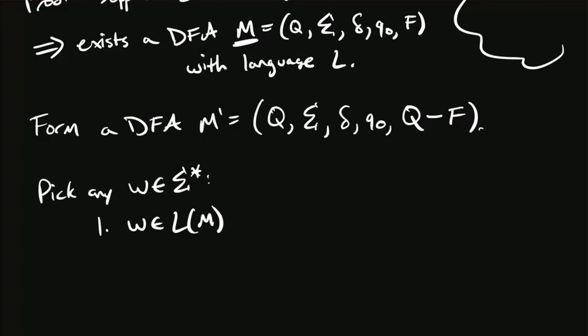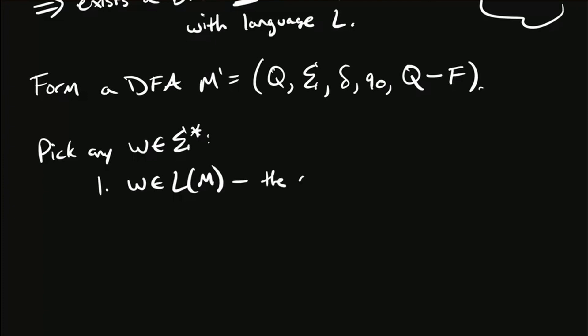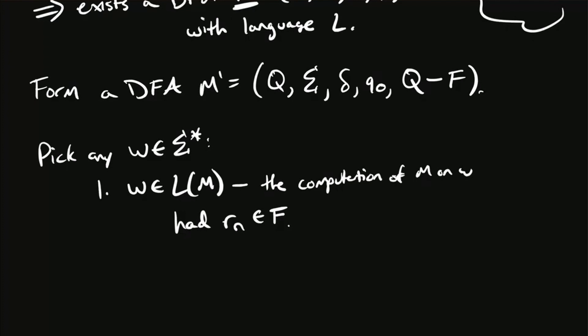Well, let's see. If it does belong to the language of M, what did M do on that string? If it belongs to the language of the machine M, what did it do on that string? It had an accepting computation, meaning it landed in what kind of state? Final state. Okay, great. So the computation of M on W had Rn, the last state, be a member of the set of final states. That's just by definition. Well, if M prime is destined to have the language L bar, should M prime accept W also?